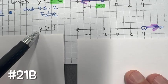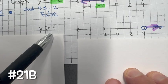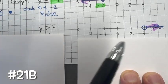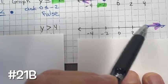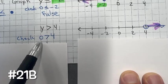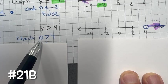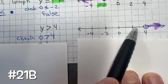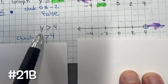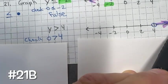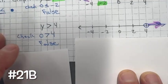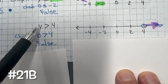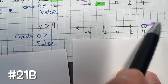The second inequality for 21 is y is greater than 4. This time there's no equal to sign, so it's an open circle at 4. Check using y equals 0: is 0 greater than 4? No, that's false. So the arrow goes to the right. Check with a value to the right, like 5: 5 is greater than 4, which is true.